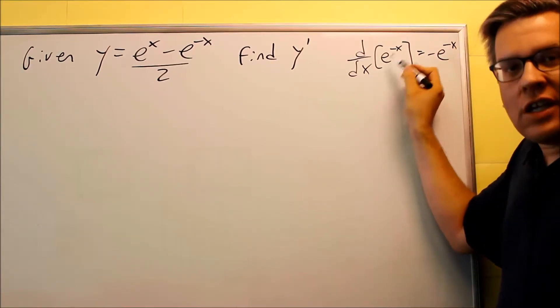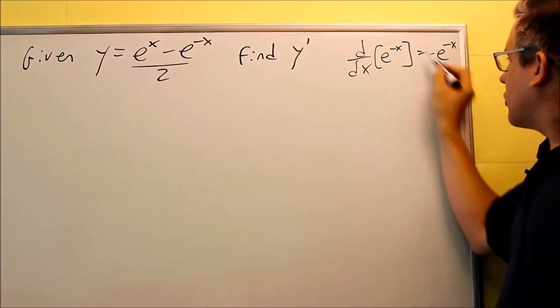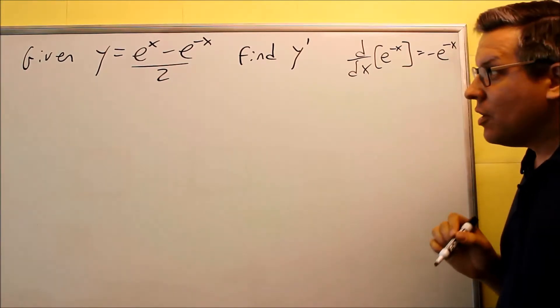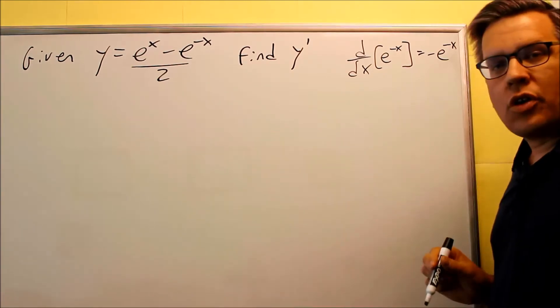So now, whenever you see e to the negative x and do the derivative, we can just go ahead and apply that formula for it, negative e to the negative x. So we're going to use that. For this problem, we want to find the derivative.